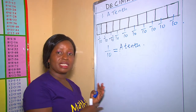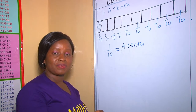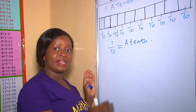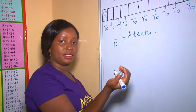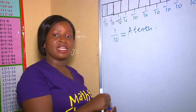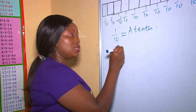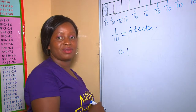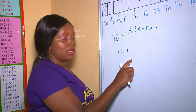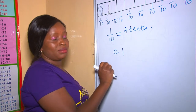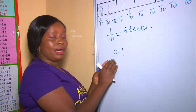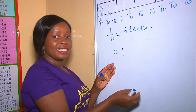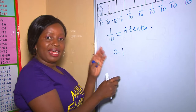The decimal point separates numbers to the left and numbers to the right. Therefore, 1/10 written as a decimal is going to be 0.1, meaning that the numbers on the right are less than the numbers on the left.